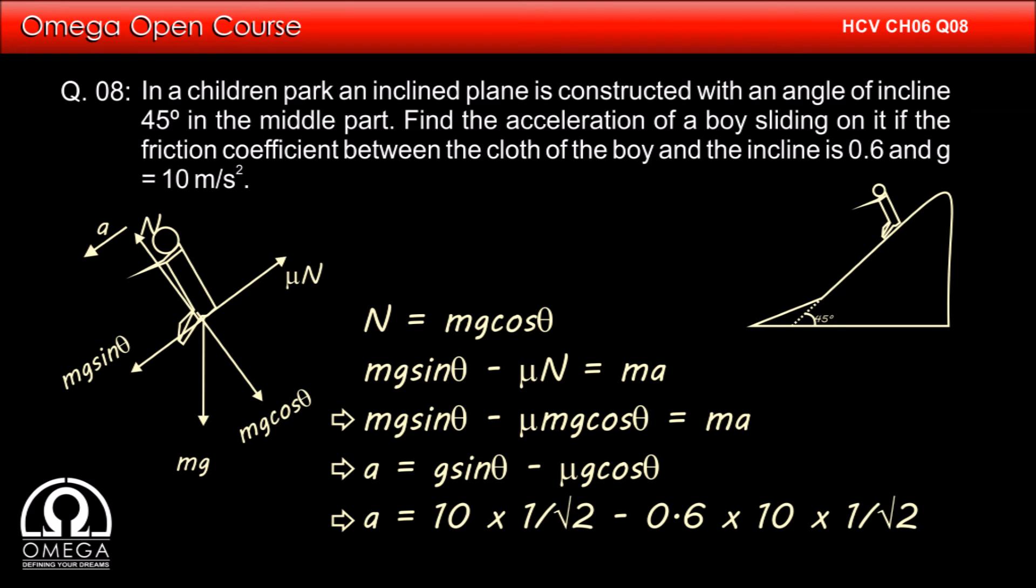Putting the values, we get a is equal to 10 into 1 by root 2 minus 0.6 into 10 into 1 by root 2, or a is equal to 4 by root 2, that is 2 root 2 meter per second square. This is our answer.